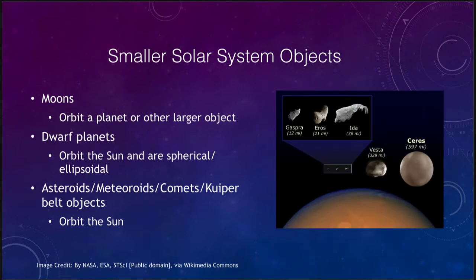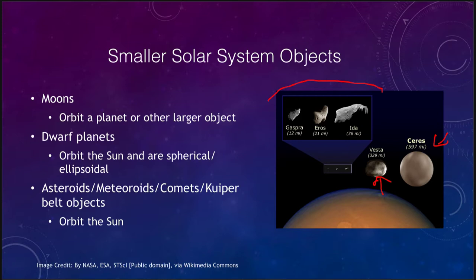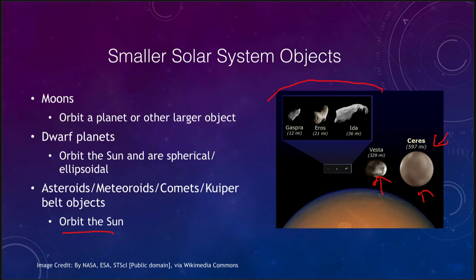There are also asteroids. Ceres and Vesta have both had spacecraft orbit them for detailed study, and we've visited several others. Asteroids are very small — you could take all the asteroids in the asteroid belt and not even make up one moon. They orbit the Sun but are not spherical. Objects like Ida, Eros, and Gaspra look like old cratered objects, like little pieces of our own Moon.